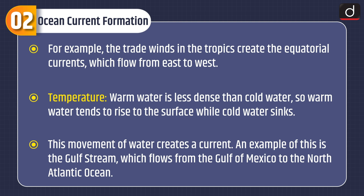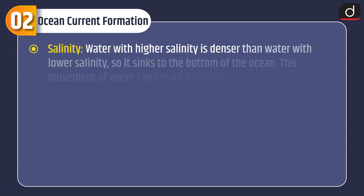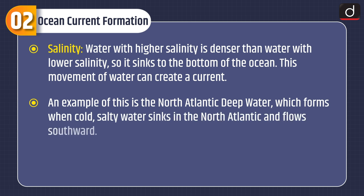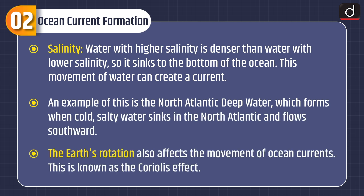Temperature is another factor. Warm water is less dense than cold water, so warm water tends to rise to the surface while cold water sinks. This movement of water creates a current. An example of this is the Gulf Stream, which flows from the Gulf of Mexico to the North Atlantic Ocean. Water with higher salinity is denser than water with lower salinity, so it sinks to the bottom of the ocean, also creating a current.